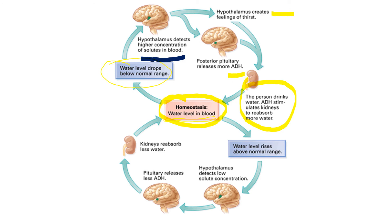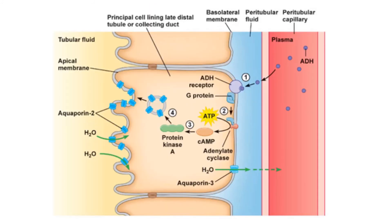If your water levels increase - you're not sweaty and you've just drunk two litres of water - your hypothalamus will detect that increase in water and the relatively low solute concentration. Your pituitary will release less ADH, your kidney will reabsorb less water, meaning you pee out more water, and so your blood will return back to normal.